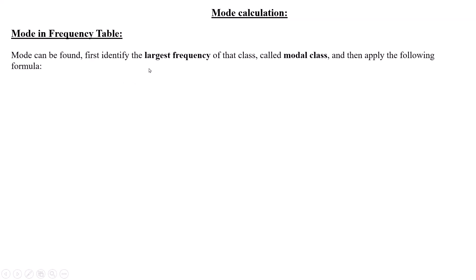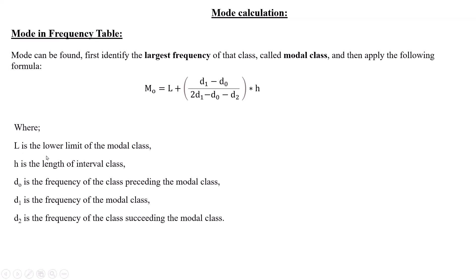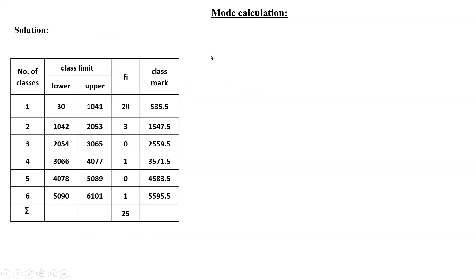Now let's find the mode. To find the mode in a frequency table, first identify the class with the largest frequency — this is called the modal class — then apply the formula: Mode = L + h × (d0 / (d0 + d2)), where L is the lower limit of the modal class, h is the class interval, d0 is the frequency of the class preceding the modal class, d1 is the frequency of the modal class, and d2 is the frequency of the class succeeding the modal class.